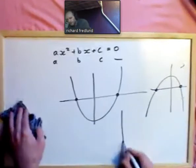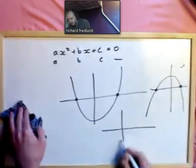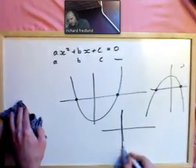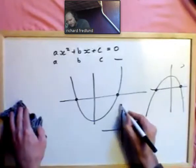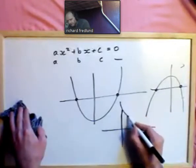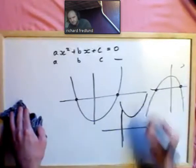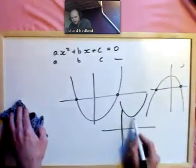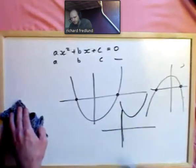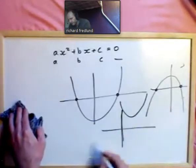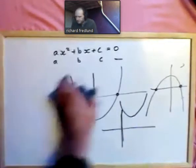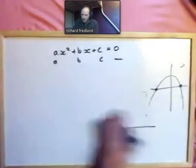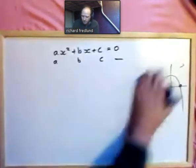Sometimes there might be no real solutions to a quadratic equation, because the curve might go entirely above the axis the whole time. It's basically either a u-shape or an n-shape.